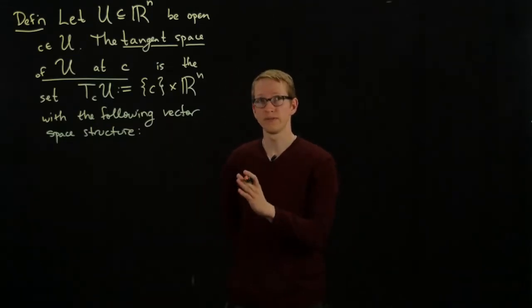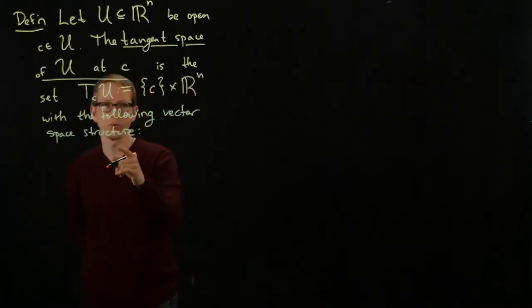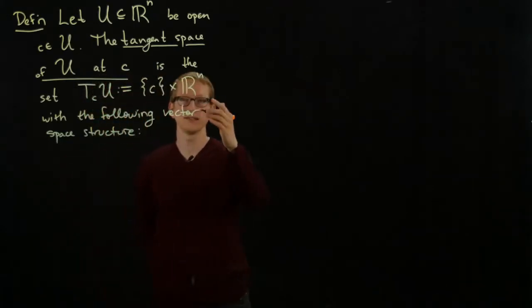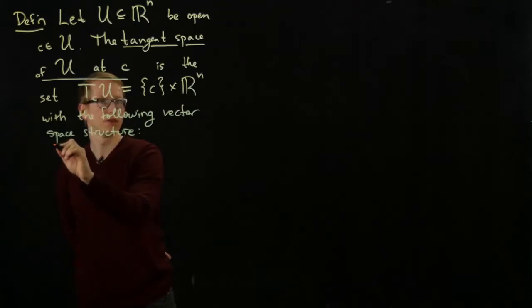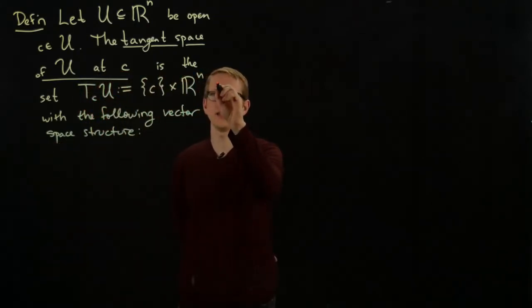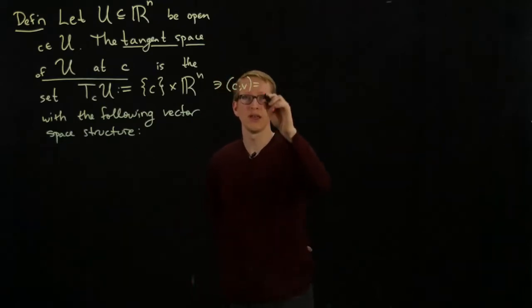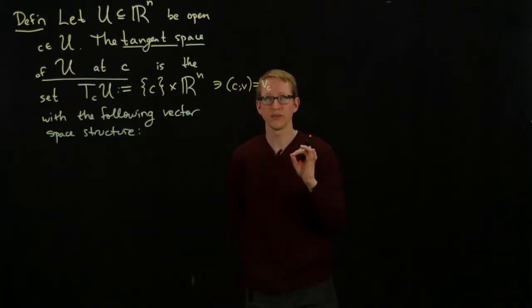Let me define those three things here. Even before we set up that structure, we should say what elements in here look like. Let us denote an element here. Instead of calling it (c,v), we'll denote it by, first of all we'll use a semicolon sometimes, and we'll write it as v subscript c. So we think of the vector v at the point c.